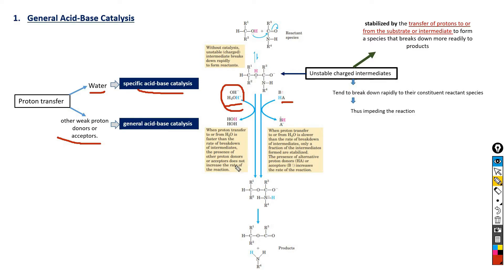But when water is not enough, the transfer of protons to or from the substrate or intermediate takes place by other weak proton donors or acceptors. This type of catalysis is known as general acid-base catalysis. In this case, many weak organic acids act as proton donors or many weak organic bases act as proton acceptors.